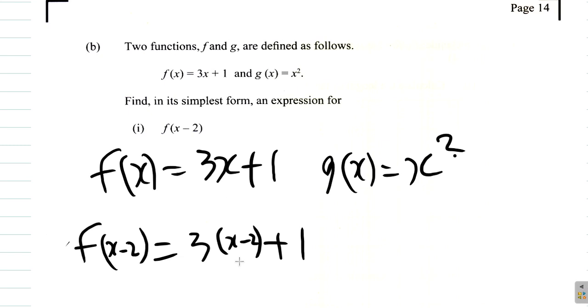If it was f of 5, we'd remove the x and put 5 there. If it was f of 8, we'd remove the x and put 8 there. But if it's f of x minus 2, we'd remove the x and put x minus 2 there.